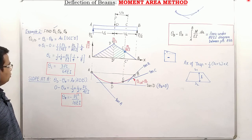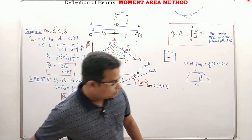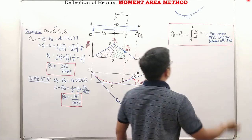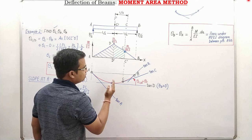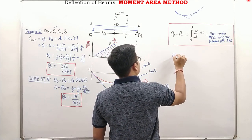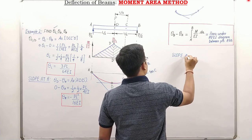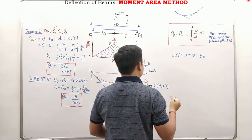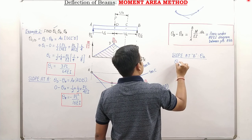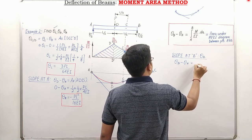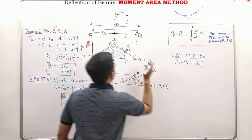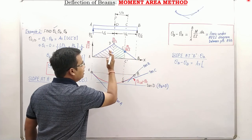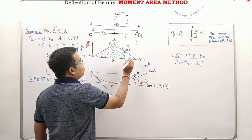Similarly, you can apply the same technique to find the slope at B. Apply Theorem 1 between B and D: theta_B − theta_D = area under M/EI diagram between B and D. With theta_D = 0, theta_B equals the area under the M/EI diagram between B and D.